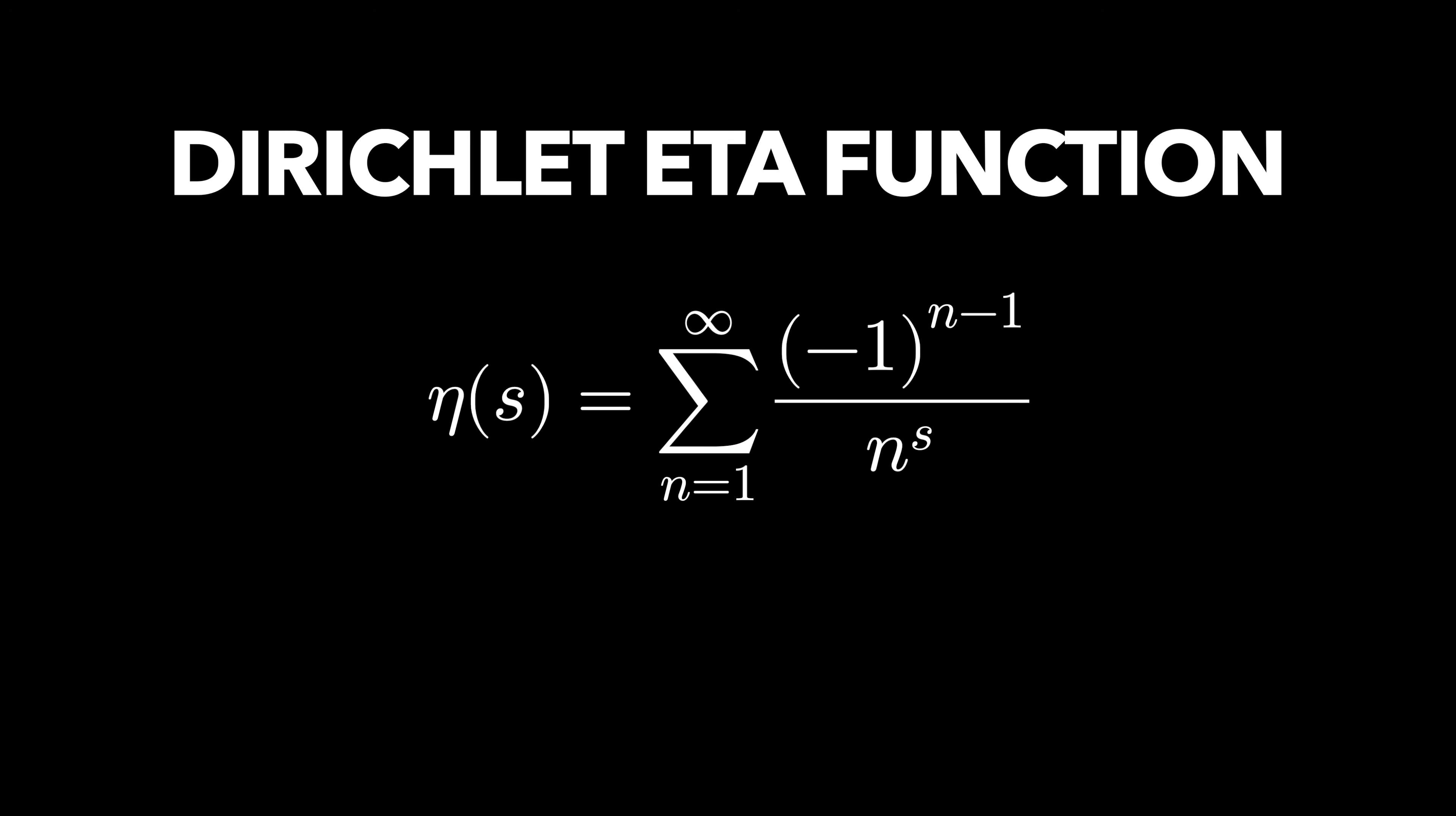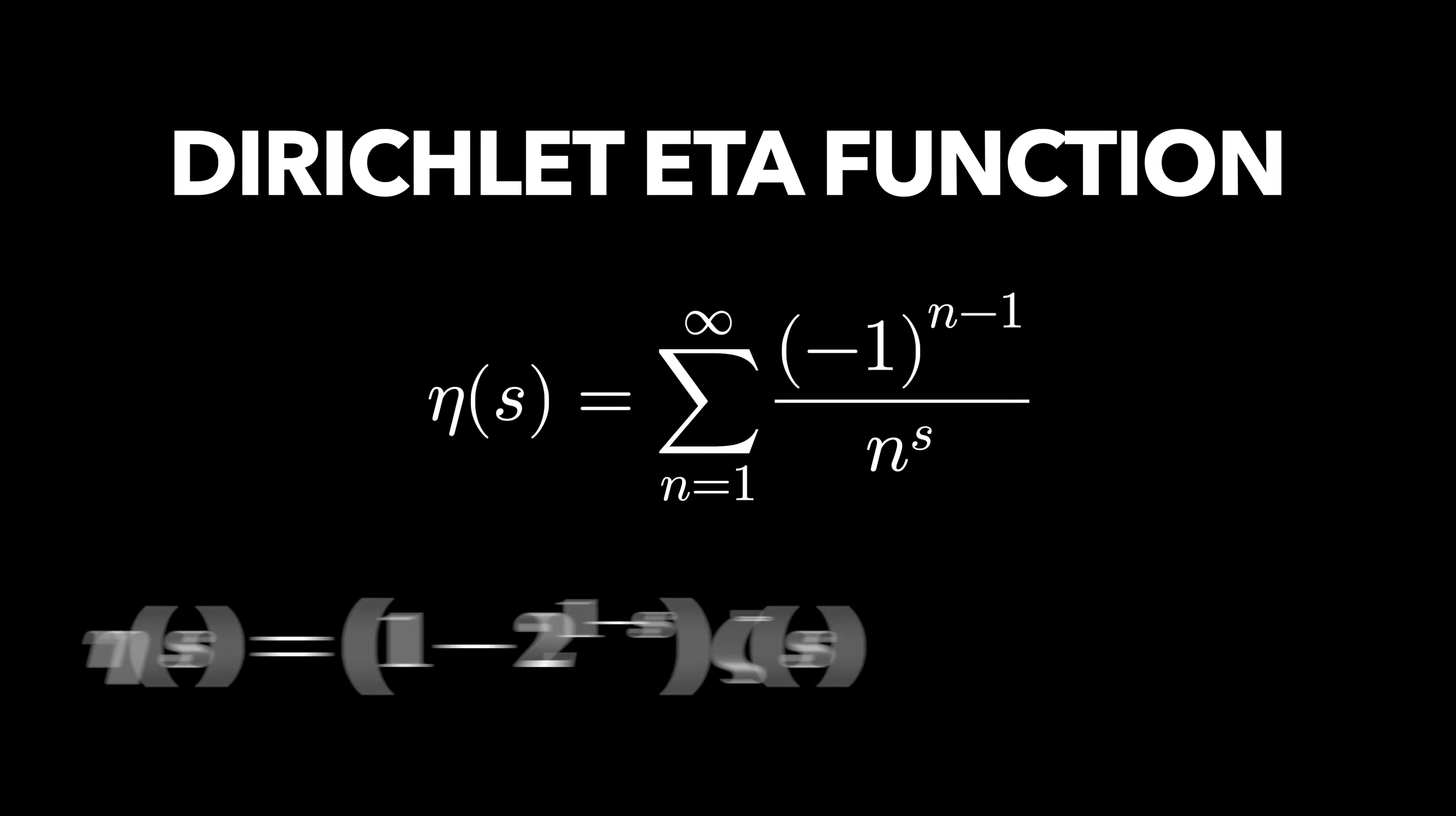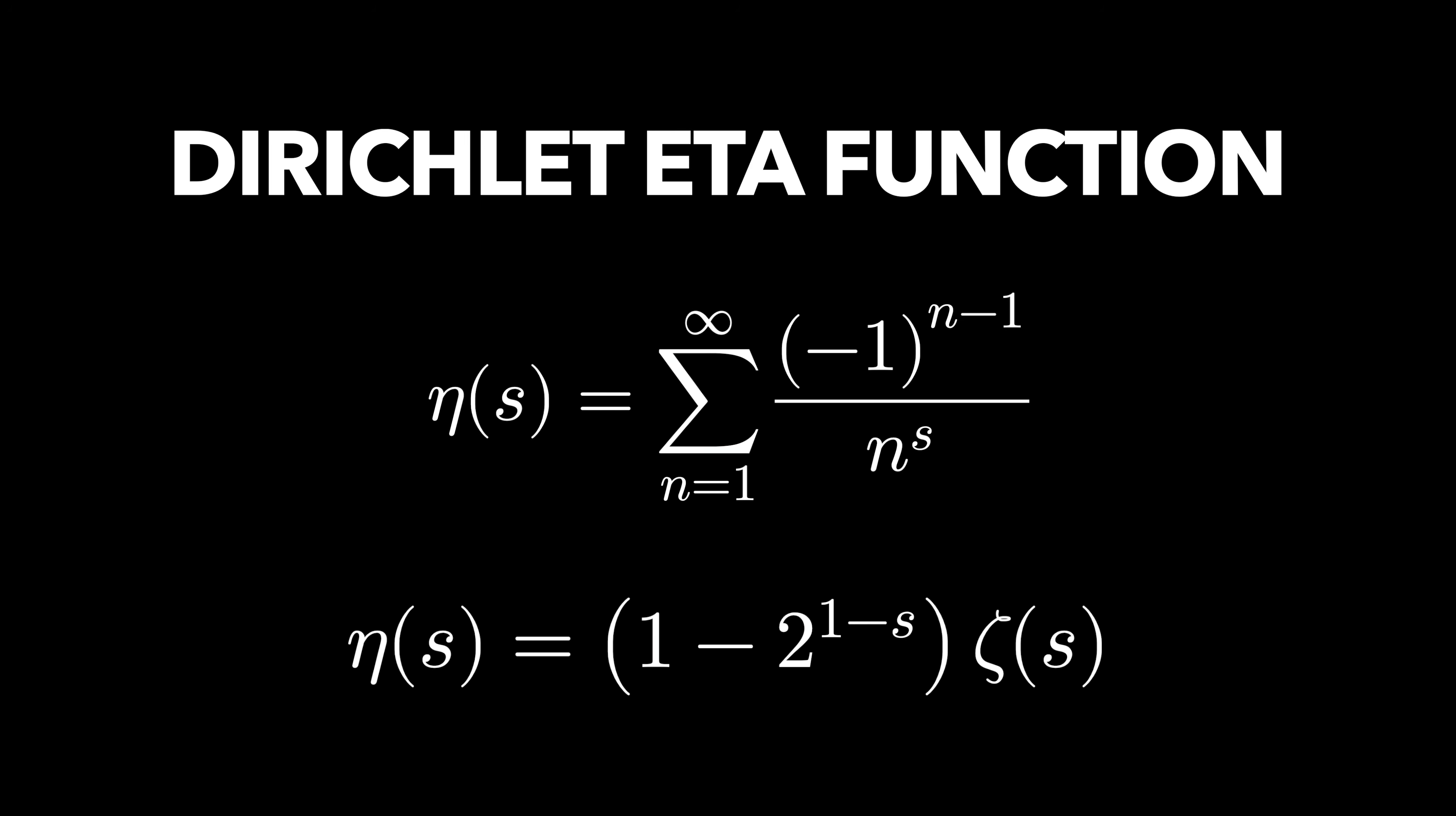which has a very nice relationship between it and the Riemann zeta function. Now, we're talking about derivatives here, so on the left let's take the derivative of the Dirichlet eta function, and on the right we'll have to deal with this product rule, keeping in mind all of our rules for differentiating exponential functions.